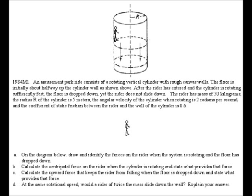The question states: an amusement park ride consists of a rotating vertical cylinder with rough canvas walls. The floor is initially about halfway up the cylinder wall as shown above. After the rider has entered and the cylinder is rotating sufficiently fast, the floor is dropped down yet the rider does not slide down.